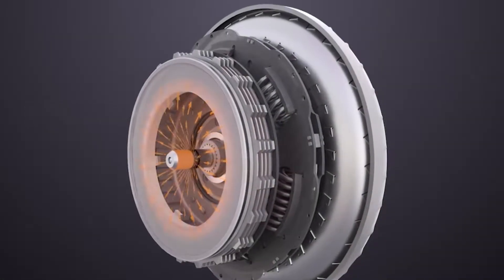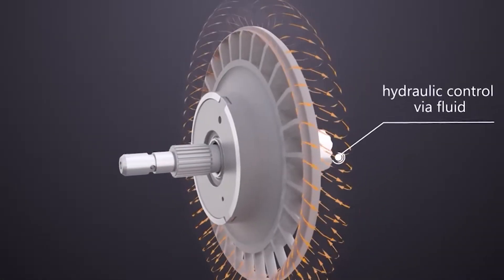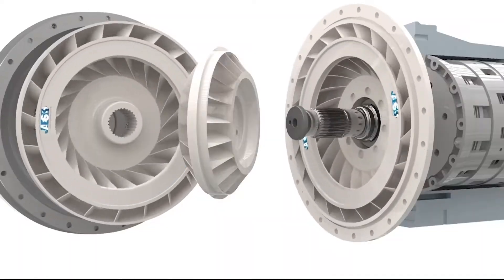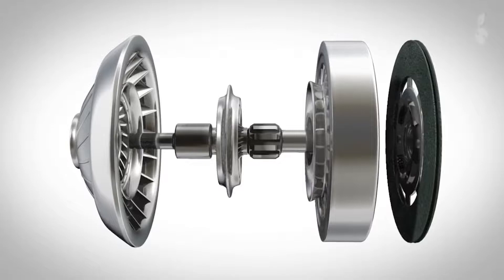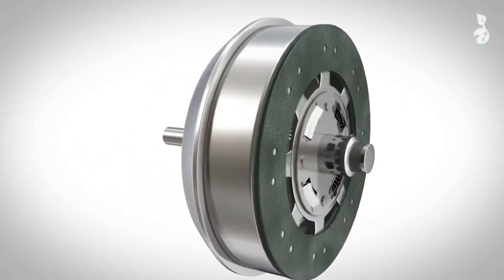A torque converter attached pump circulates transmission fluid around the torque converter, spinning the fan and transmitting torque into the transmission. Because of this fluid-driven mechanism, the torque converter has greater torque leverage at lower revs.